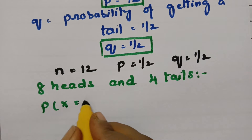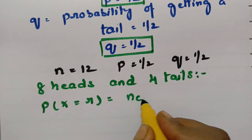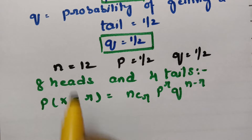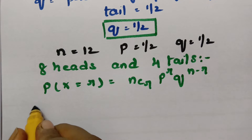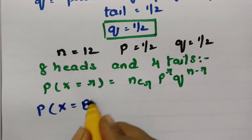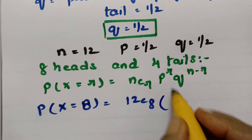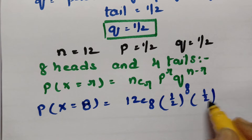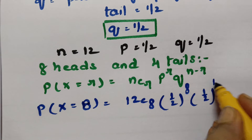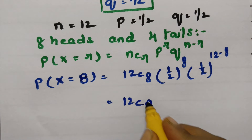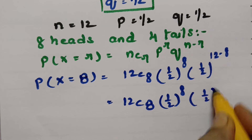According to the binomial distribution, the probability of X equal to R is: N C R times P to the power R times Q to the power N minus R. Here the value of N is equal to 12, and R is equal to 8. So we have 12C8, where P is the probability of getting a head raised to power 8, and Q is the probability of getting a tail. N is 12 and R is 8.